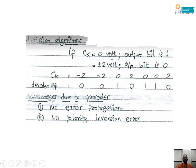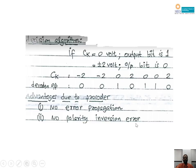Applying this algorithm to the received CK sequence -2, -2, 0, +2, 0, 0, +2: minus 2 → 0; minus 2 → 0; 0 → 1; plus 2 → 0; 0 → 1; 0 → 1; plus 2 → 0. This gives 0, 0, 1, 0, 1, 1, 0, which is exactly the same as the original bits. Two advantages: no error propagation (each decision is independent, not based on previous bit) and no polarity inversion error (the same decision is made for both +2 and -2 voltages, so polarity reversal does not affect the output).